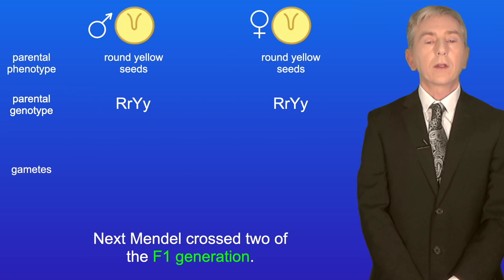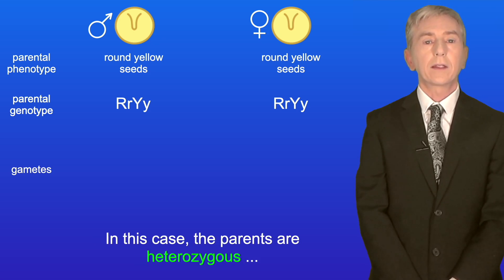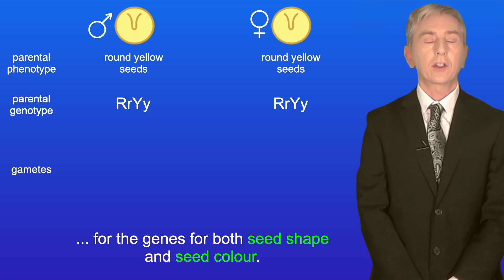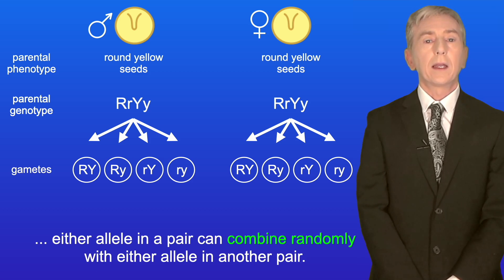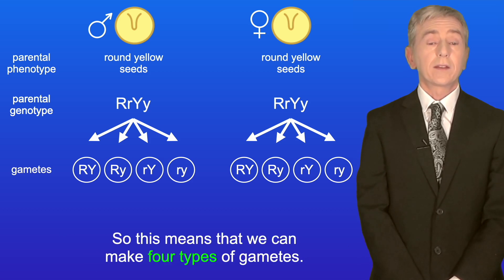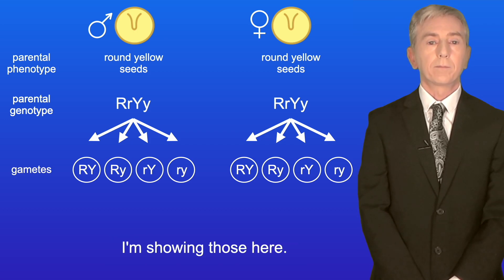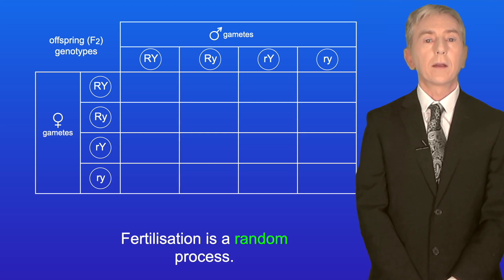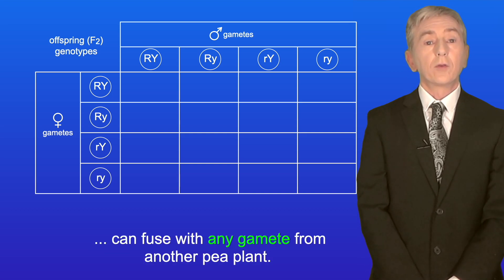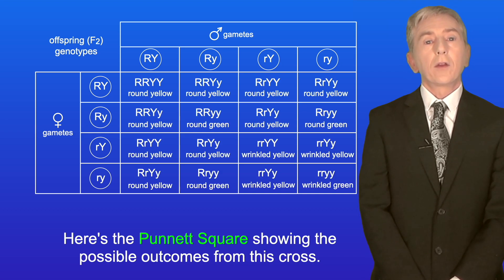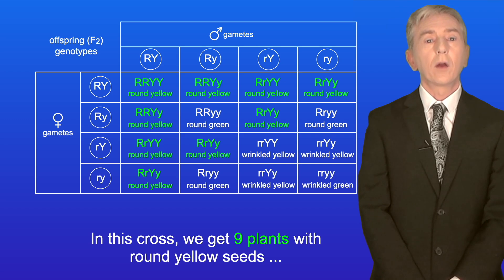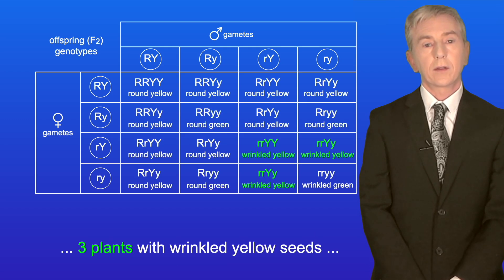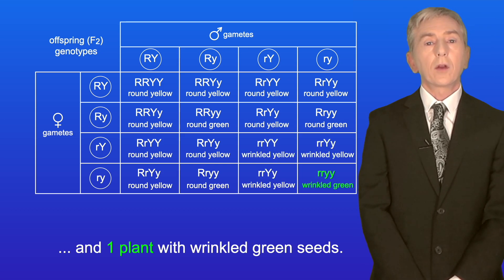Next, Mendel crossed two of the F1 generation. In this case the parents are heterozygous for the genes for both seed shape and seed color. Mendel's law of independent assortment says that either allele in a pair can combine randomly with either allele in another pair, so we can make four types of gametes. Fertilization is a random process — any gamete from one pea plant can fuse with any gamete from another pea plant. Here's a Punnett square showing the possible outcomes from this cross. In this cross we get nine plants with round yellow seeds, three plants with round green seeds, three plants with wrinkled yellow seeds, and one plant with wrinkled green seeds.